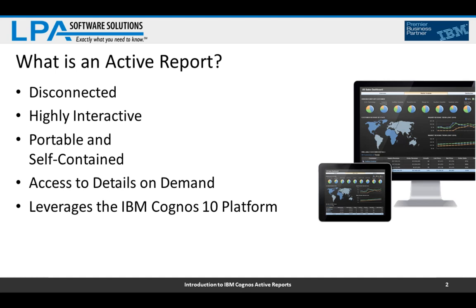For details on demand, if you've built a drill-through in an active report MHT file and click on it, it can connect to your Cognos server and pull up details. So you can write drill-throughs from an active report to a connected interactive report. You can also embed both summary and detailed data in an active report so it doesn't have to go to the live Cognos server for details — two choices there.